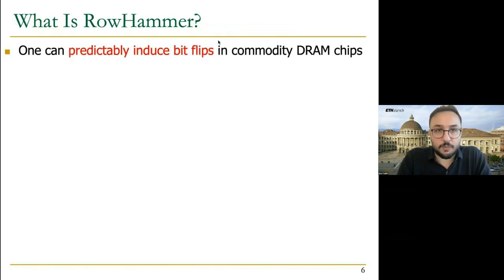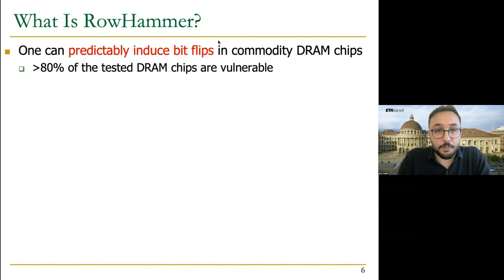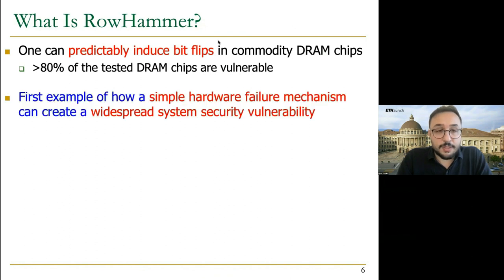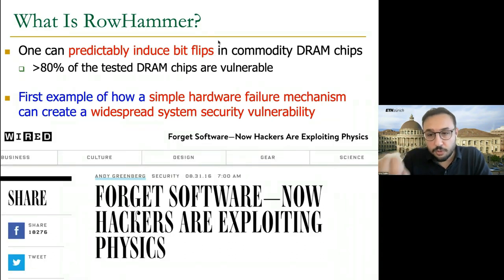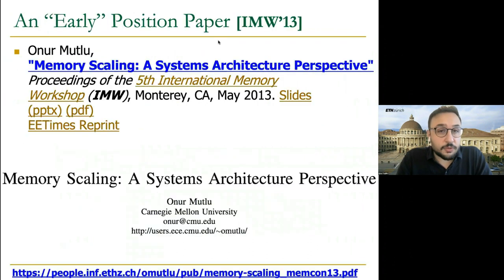RowHammer is a phenomenon where one can predictably induce bit-flips in commodity DRAM chips, and most of the DRAM chips available today are vulnerable to RowHammer. This is the first example of how a simple hardware failure mechanism can create a widespread system security vulnerability. As a result, you see articles like 'Forget software, now hackers are exploiting physics.'